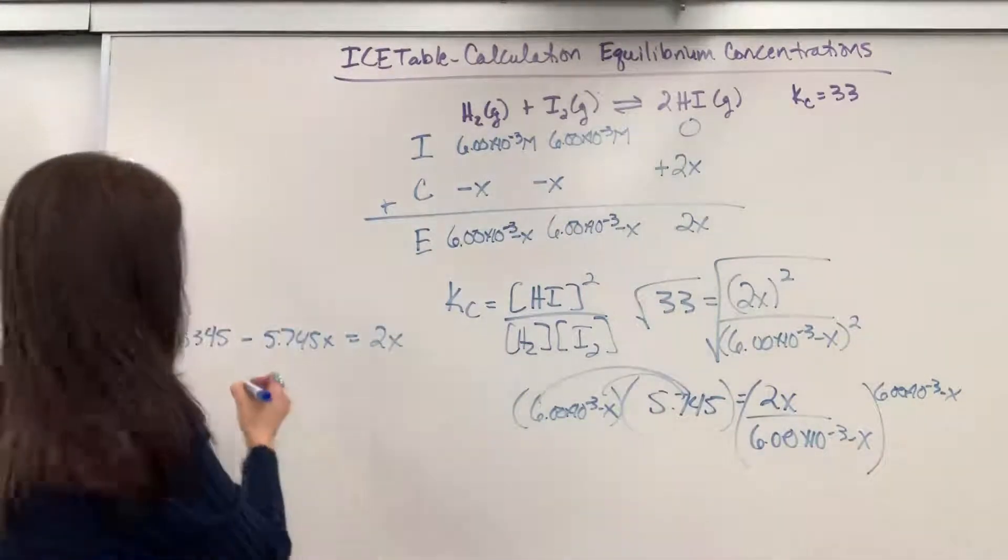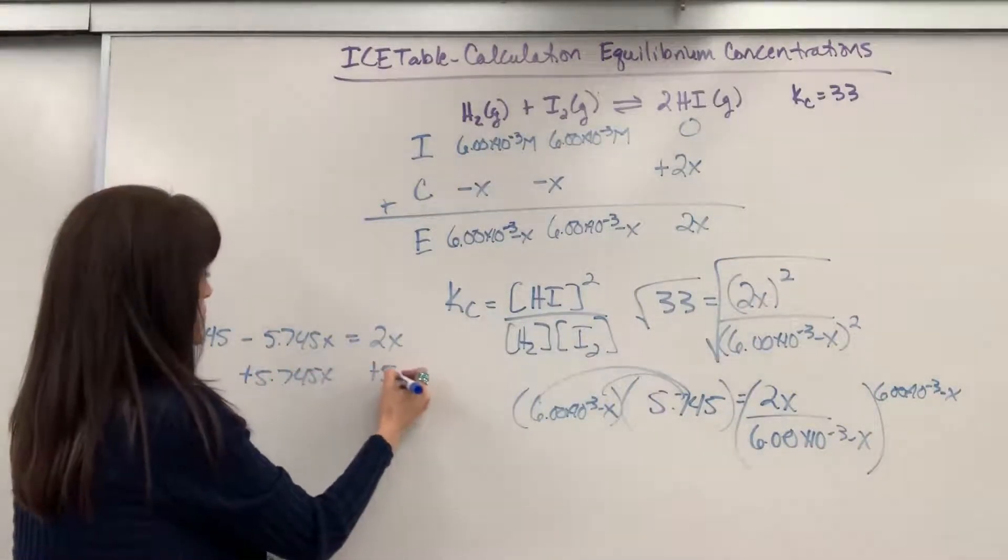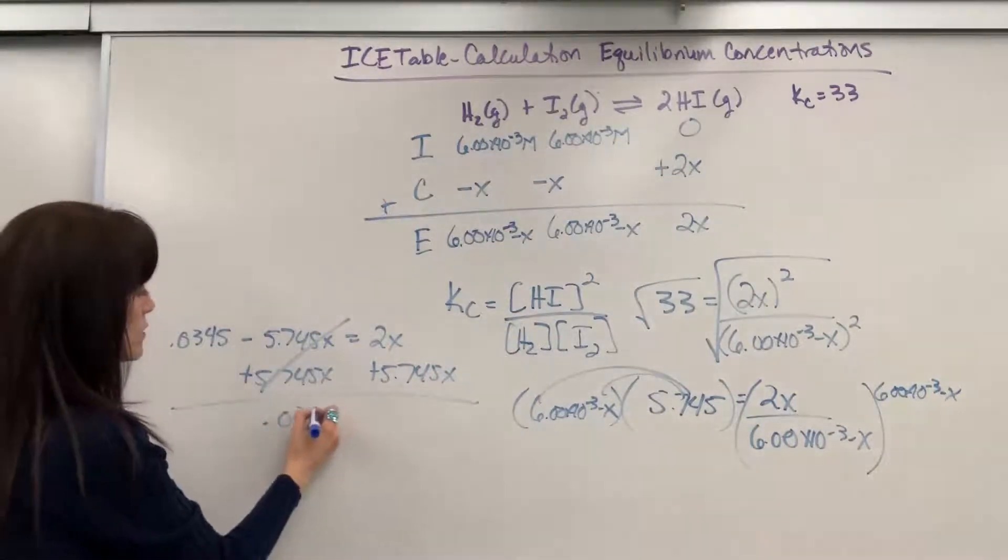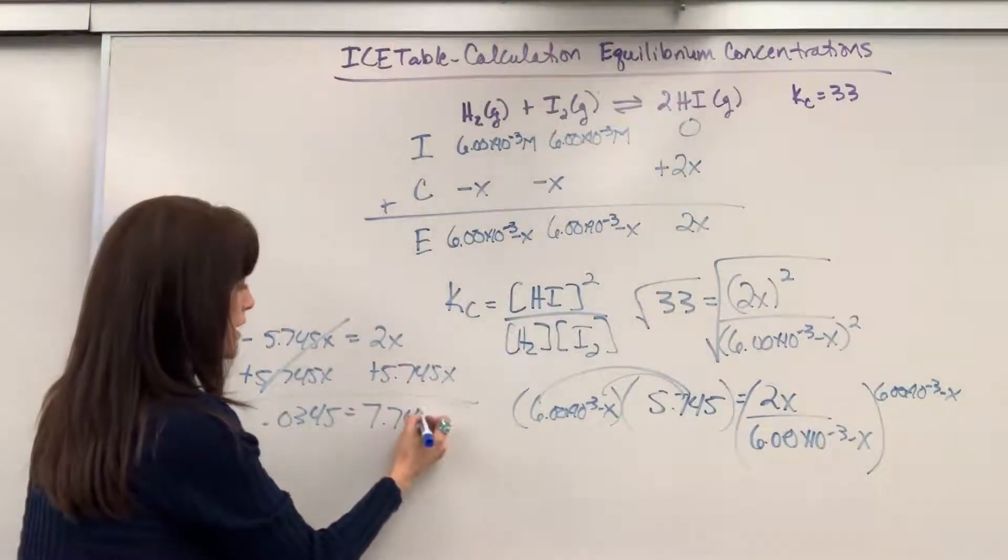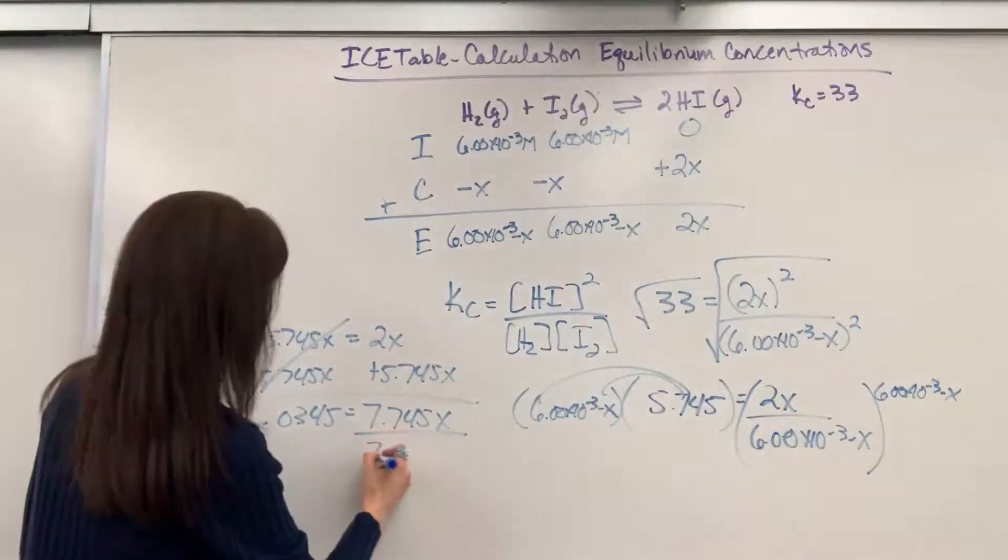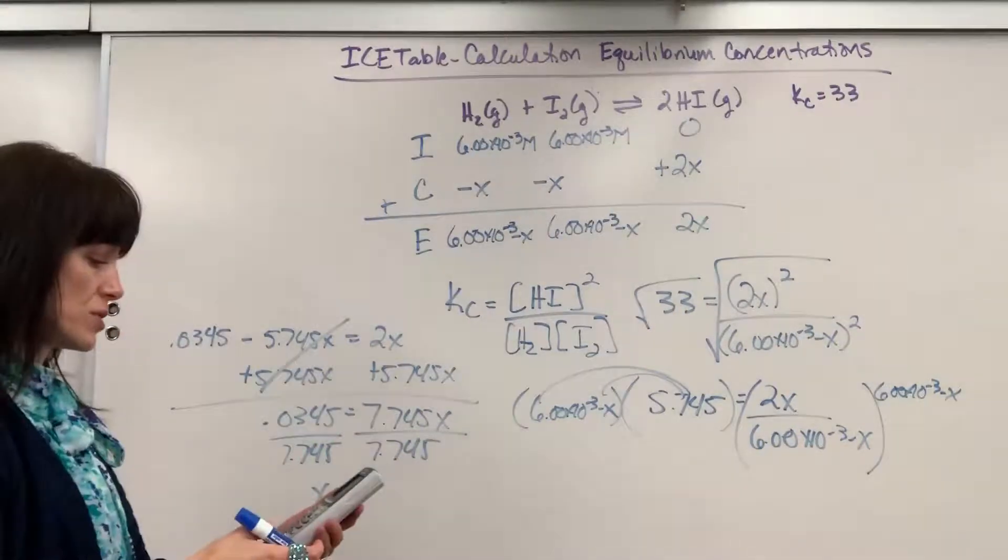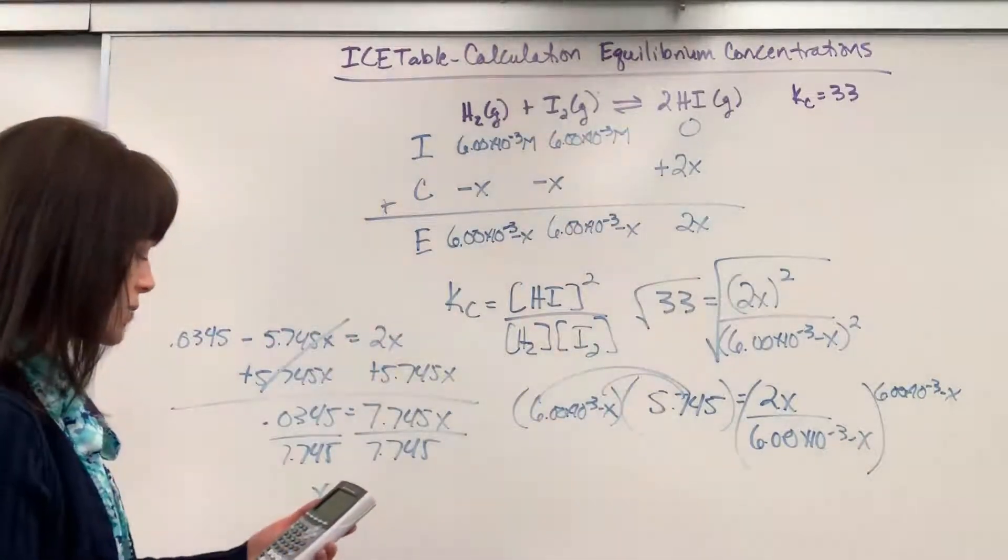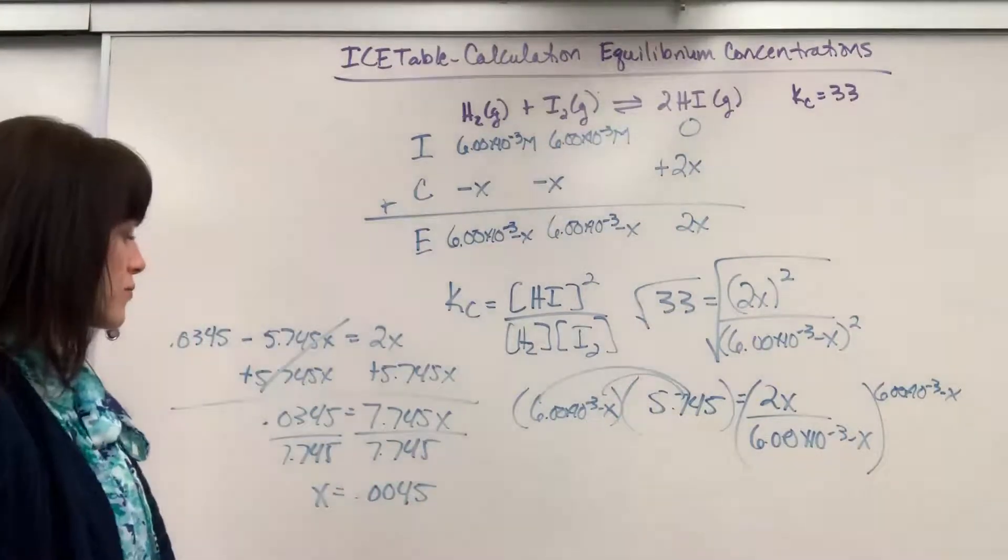So let's go ahead and combine like terms. I will add the 5.745X to both sides plus 5.745X. That cancels, we'll get 0.0345 equals 7, so 2 plus the 5, 7.745X. And now let's solve. Let's divide both sides by the 7.745, and X is going to equal 0.0045.